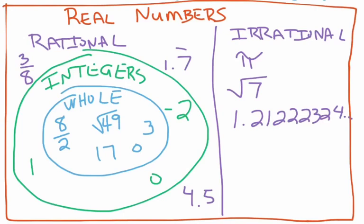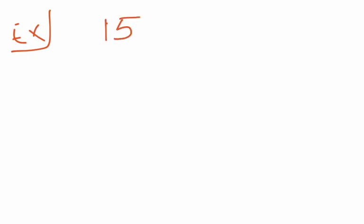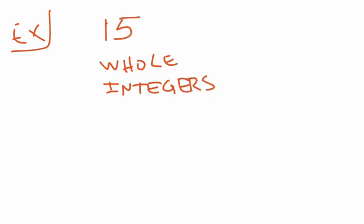In your homework, you'll be asked to classify and categorize a lot of different numbers and give all the sets and subsets a number belongs to. For example, if I give you the number 15: it's one of the counting numbers you learned as a kid, so it's a whole number. All whole numbers are also integers, all integers are rational, and all rational numbers are real.